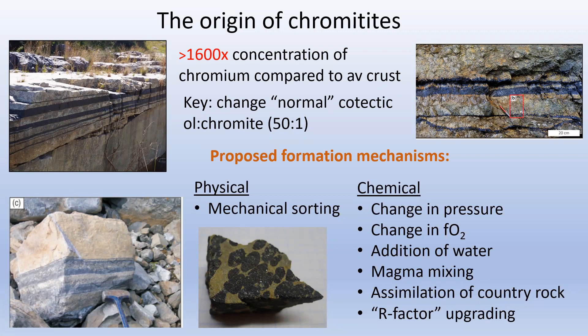There are a couple of different mechanisms we might use. The first are physical mechanisms — mechanical sorting — which I'm not going to talk about today. I'm going to focus on things that are chemically related: changes in intensive parameters like pressure, the redox state of the system as recorded by oxygen fugacity, addition of water, magma mixing and assimilation, and a more recently suggested idea of an R-factor operating on pre-existing oxide minerals. I'll focus most of this discussion on processes evoked for the formation of stratiform chromatites, not the somewhat different podiform chromatites that occur in mantle sections of olivinites.